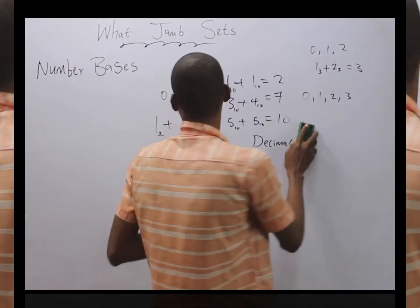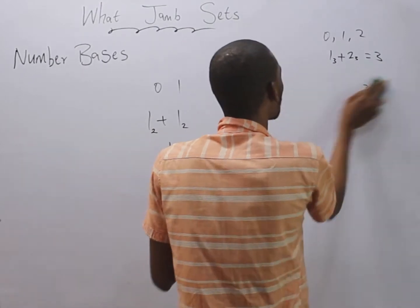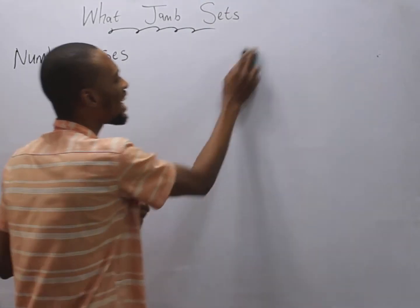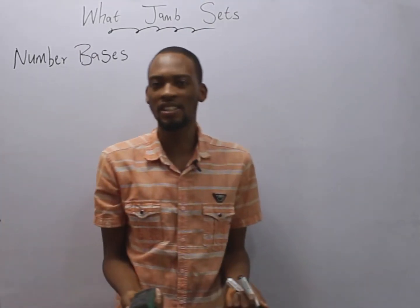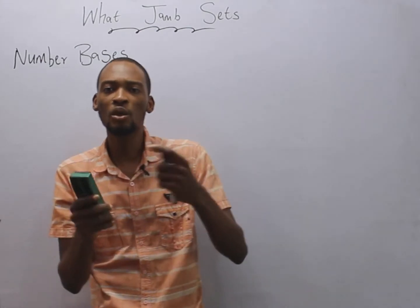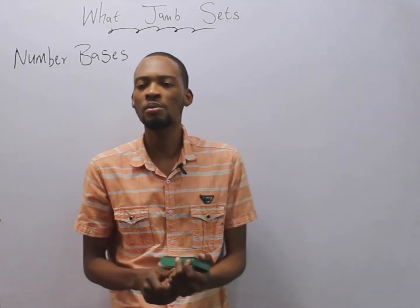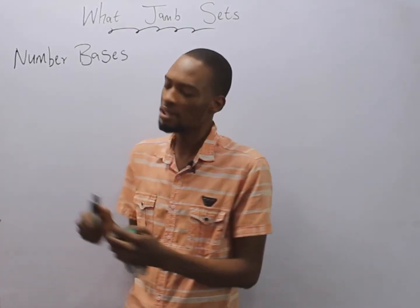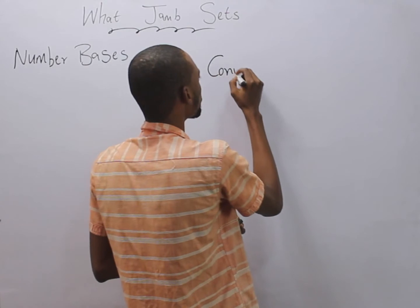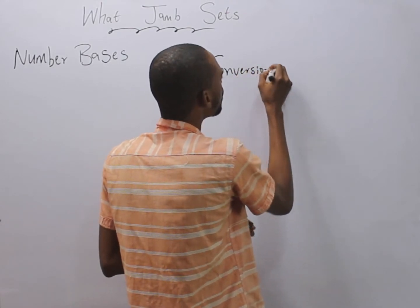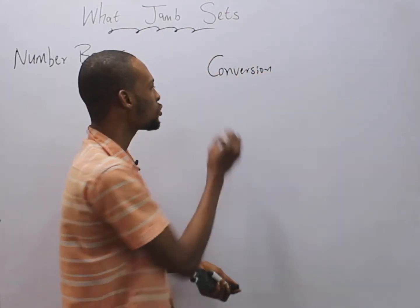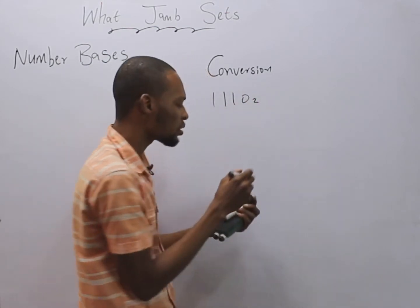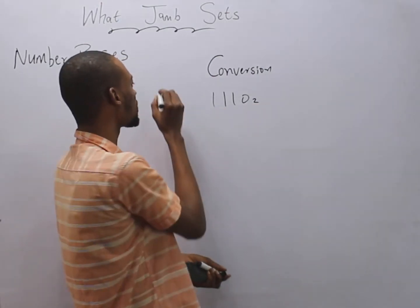JAM expects you to know how to add, subtract, and multiply different number bases. Another thing JAM expects you to know on number bases is conversion — conversion from one base to another. For example, if I give you one one one zero in base two and say convert to base ten.